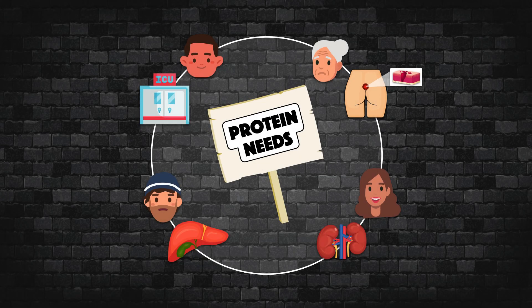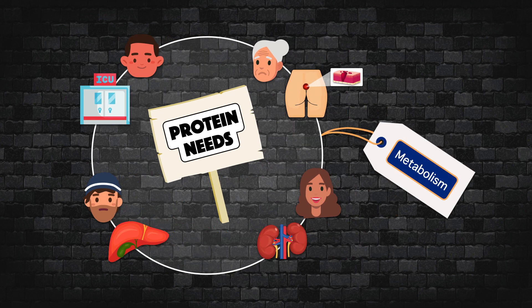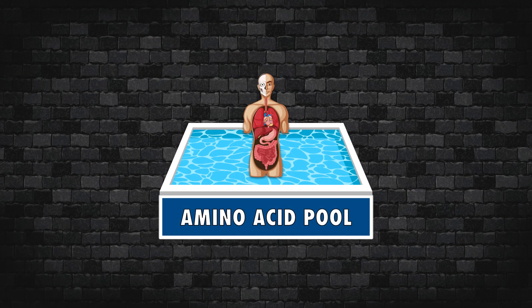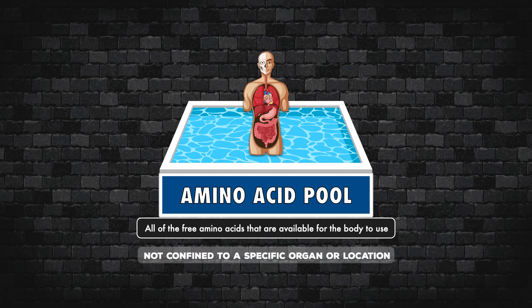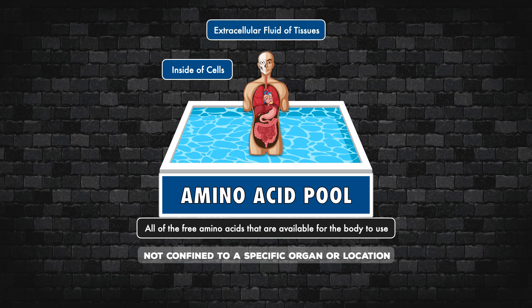If you want to understand the protein needs in various disease states, then you first need to understand some basics of protein metabolism in the body. For this, there's no better place to start than the amino acid pool, which consists of all of the free amino acids that are available for the body to use. It's not confined to a specific organ or location — instead, it's distributed throughout the body and found inside of cells, in the extracellular fluid of tissues, and in the blood plasma.